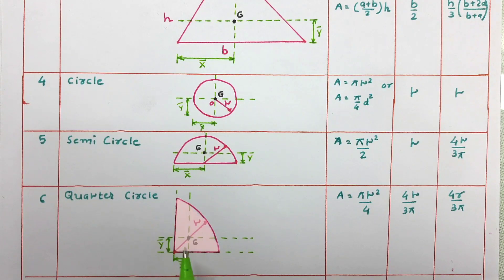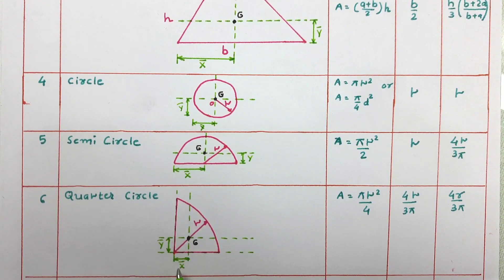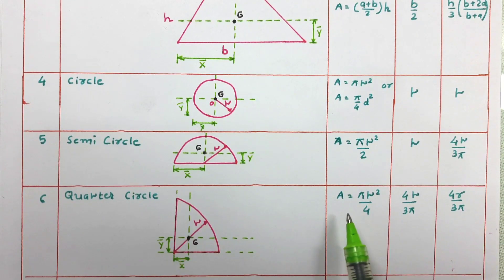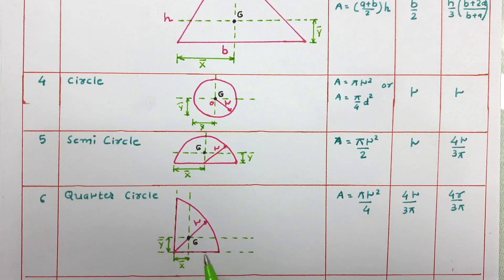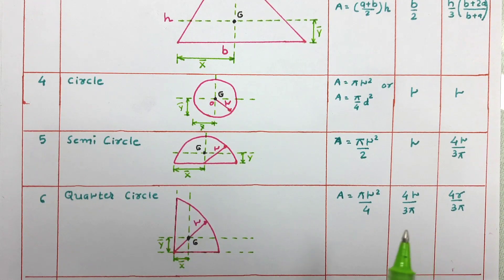The next figure is the quarter circle, having radius r. The centroid of the quarter circle is at x-bar and y-bar distance from its center. Both x-bar and y-bar are equal to 4r by 3pi — this is important to remember. The area of the quarter circle equals pi r squared by 4, which is one-fourth of the total area of the circle.